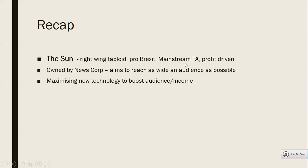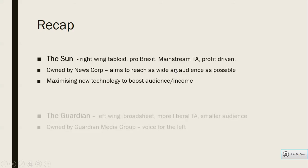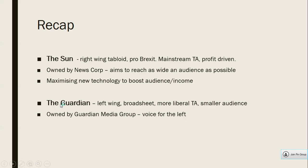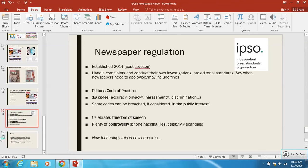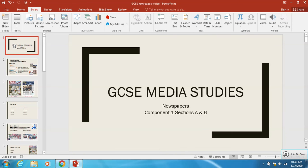Quick recap: the Sun is right-wing, pro-Brexit, with a very mainstream target audience and is profit-driven. Think about media language and representation in your set texts. They're owned by News Corp and doing everything they can to reach the broadest mainstream audience, including maximising new technology. The Guardian is left-wing, a broadsheet with a more liberal, more educated but smaller audience, owned by the Guardian Media Group — yes profit-driven, but equally a voice for the left, wanting their ideologies to transmit through society and their readership. Good luck in your exam.